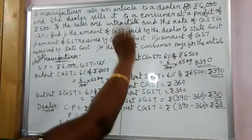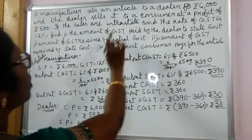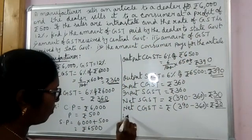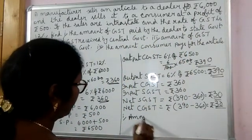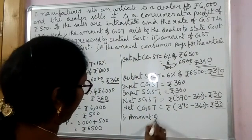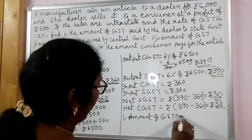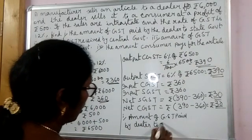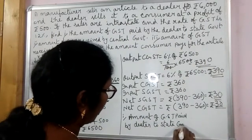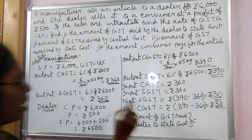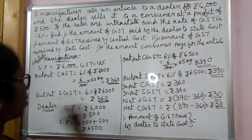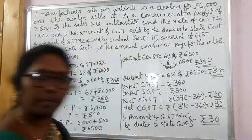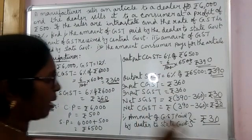Now let us answer the questions as per the problem. First: the amount of GST paid by the dealer to the state government. The dealer paid 30 rupees to the state government.